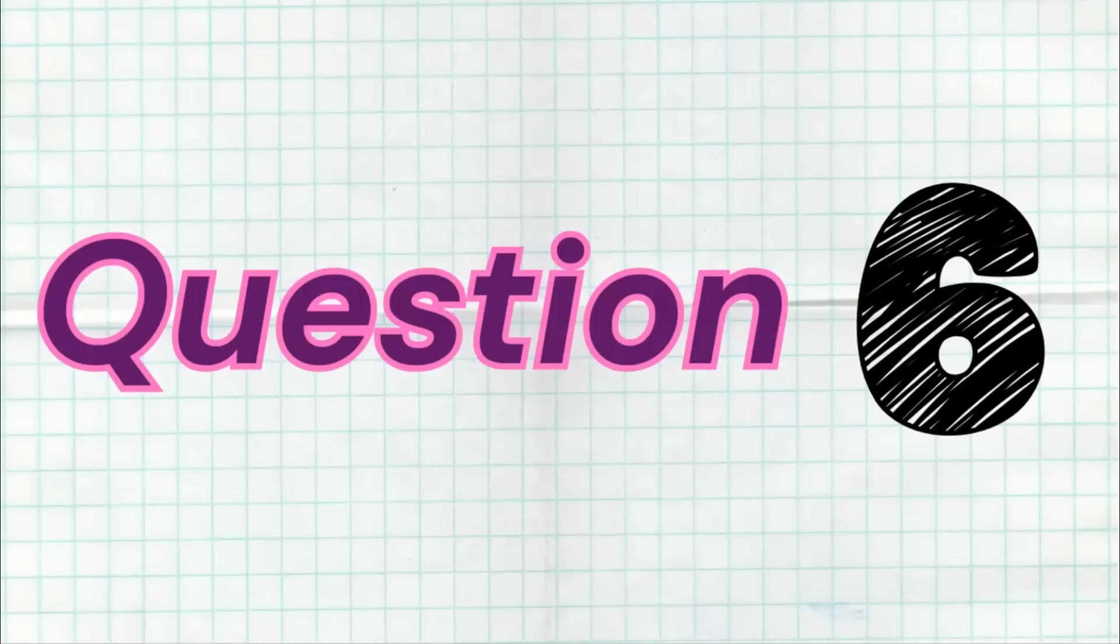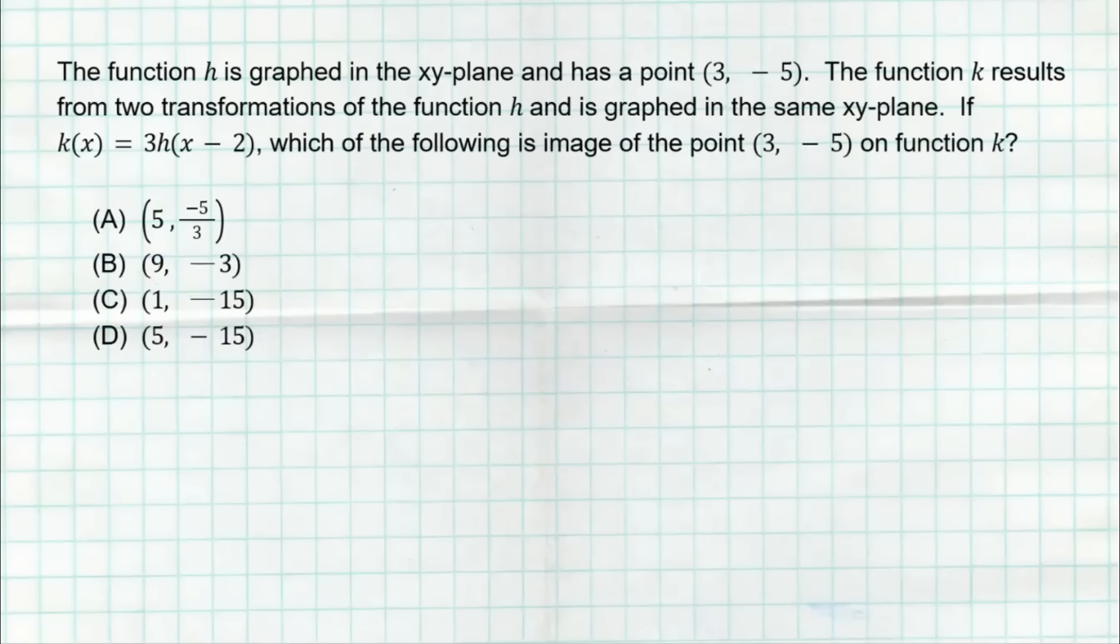Question number six. And the correct answer here is D. Now, this is a classic transformation question. So let's first make sure we understand the transformations taking place. First, we have a three on the outside. A three on the outside is gonna multiply our Ys by three. That's a vertical dilation. So it's gonna multiply your outputs by three. So if I have an output of negative five, it's gonna multiply that by three, and it's gonna become negative 15. Now, on the inside, we have a minus two. That's gonna be a horizontal translation, but this is where you gotta be careful. It says minus two, but that actually means to the right two. On the inside, it's gonna do the opposite. Hopefully, you learned that in class.